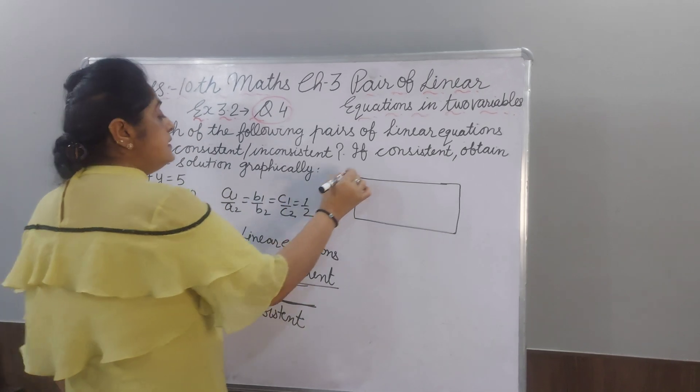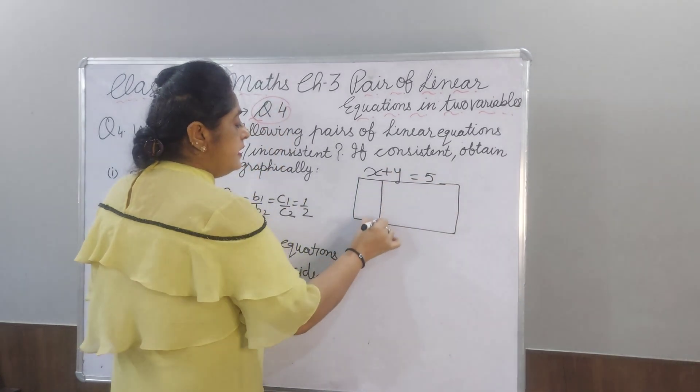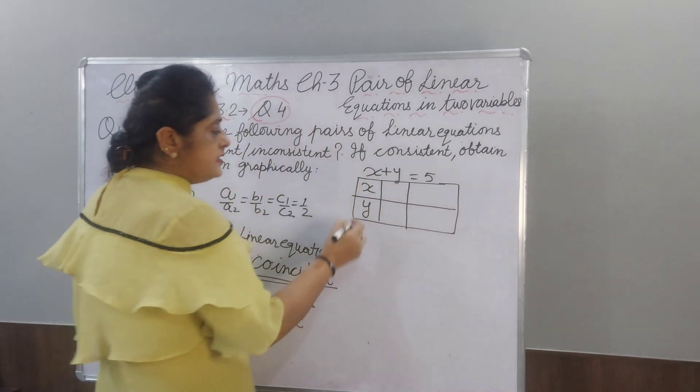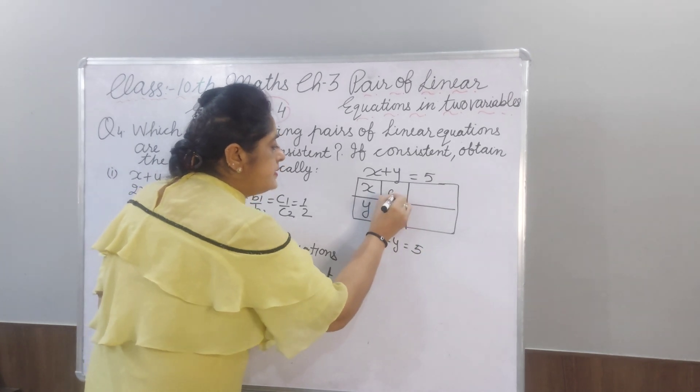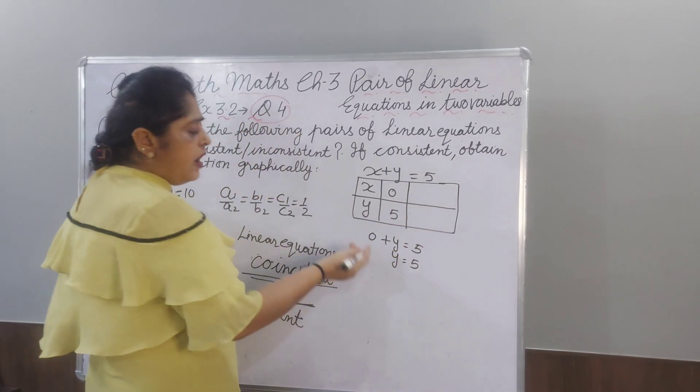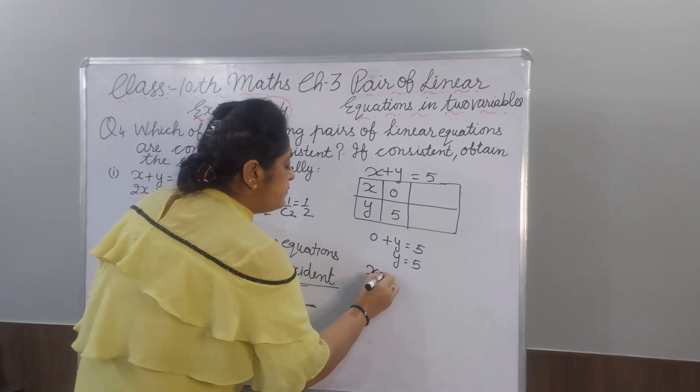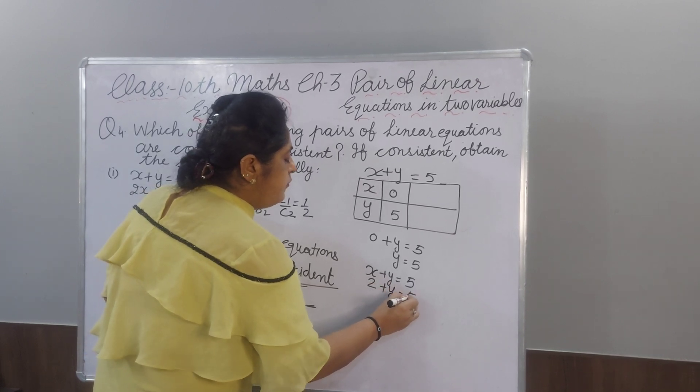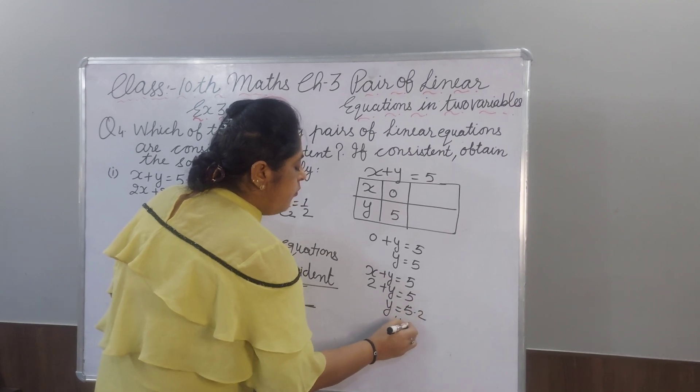First equation is X plus Y equal to 5. Here is a X and here is a Y. First, assume X equal to 0. 0 plus Y equal to 5. We are putting X 0 and Y value is coming 5.